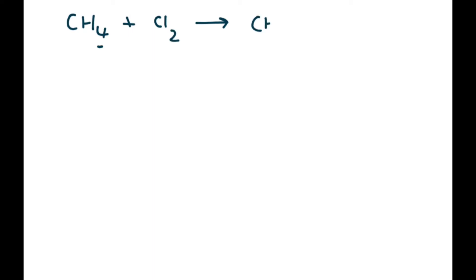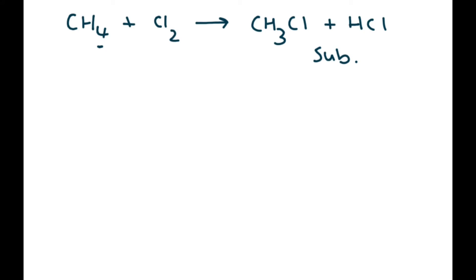You end up with CH₃Cl — the hydrogen comes off and a chlorine goes in its place — and the other product to balance the equation is HCl. This is called a substitution reaction.